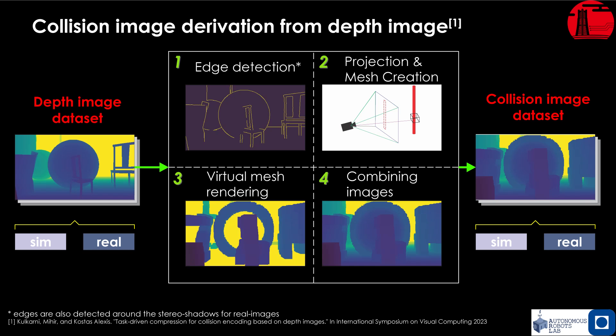Moreover, complex obstacles such as nets, branches, and twigs with gaps are inflated to form a single large region in the collision image.